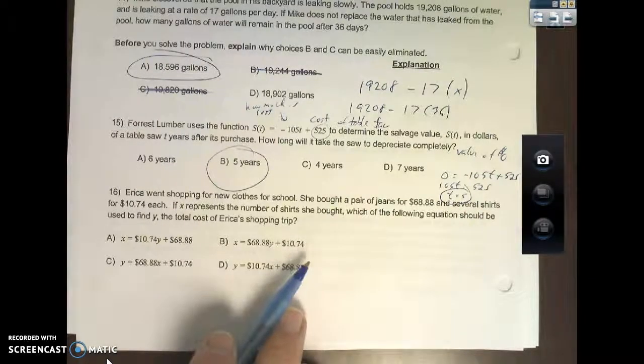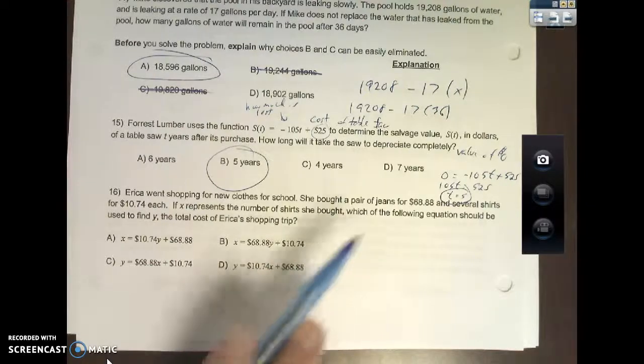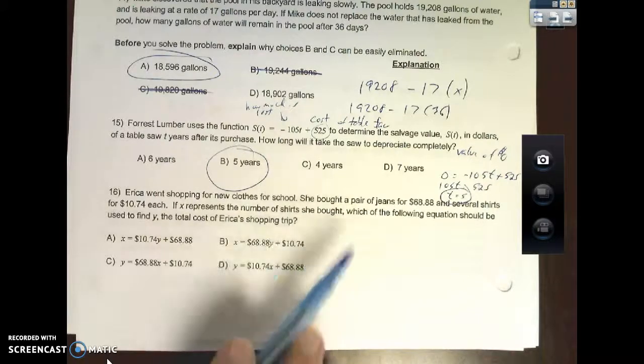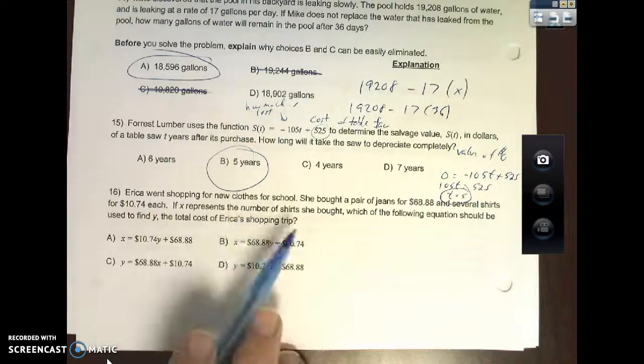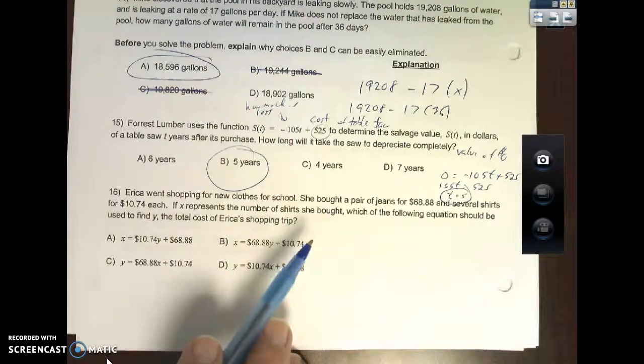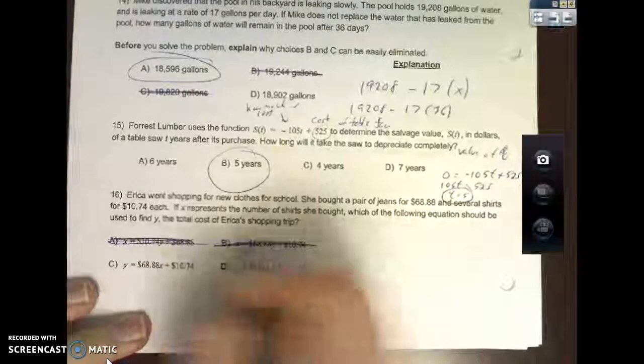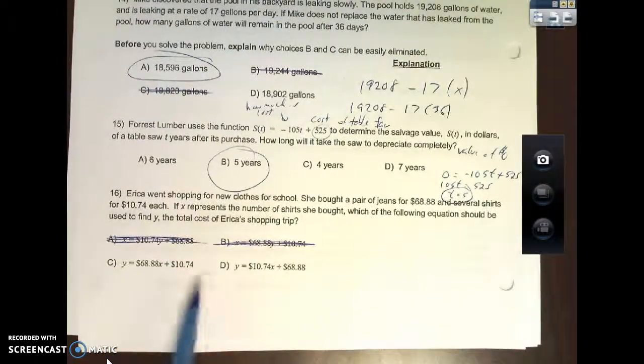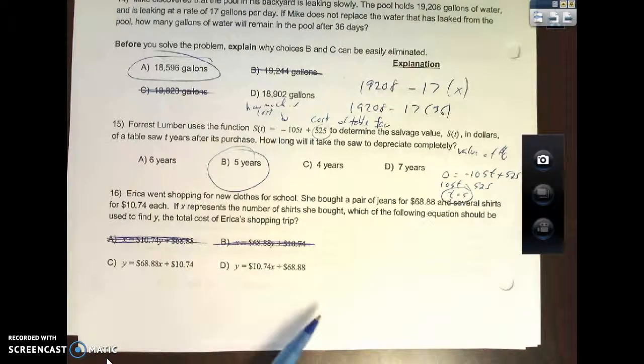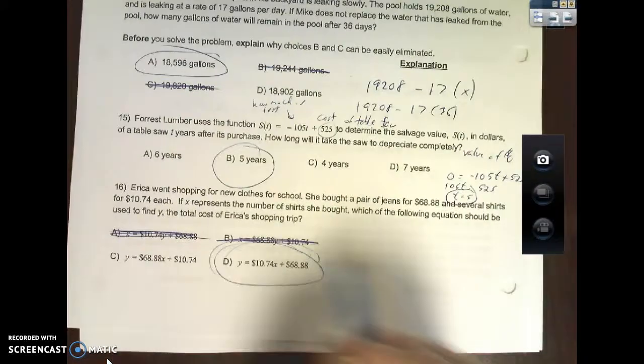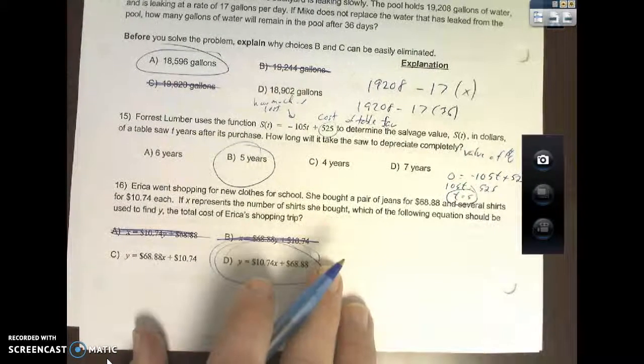Erica went shopping for new clothes for school. She bought a pair of jeans for $68.88, meaning just one pair of jeans, so the 68.88 should be by itself. And several shirts for $10.74 each. If x represents the number of shirts she bought, which of the following equations should be used to find y, the total cost of Erica's shopping trip? Well if it says y is the total cost of shopping trip, that means we need y equals. So right away I can cross out these two x equals. Now between the two, you bought one pair of jeans for 68.88, meaning that there's no more than that. And each shirt cost 10.74. D is looking like our best answer.